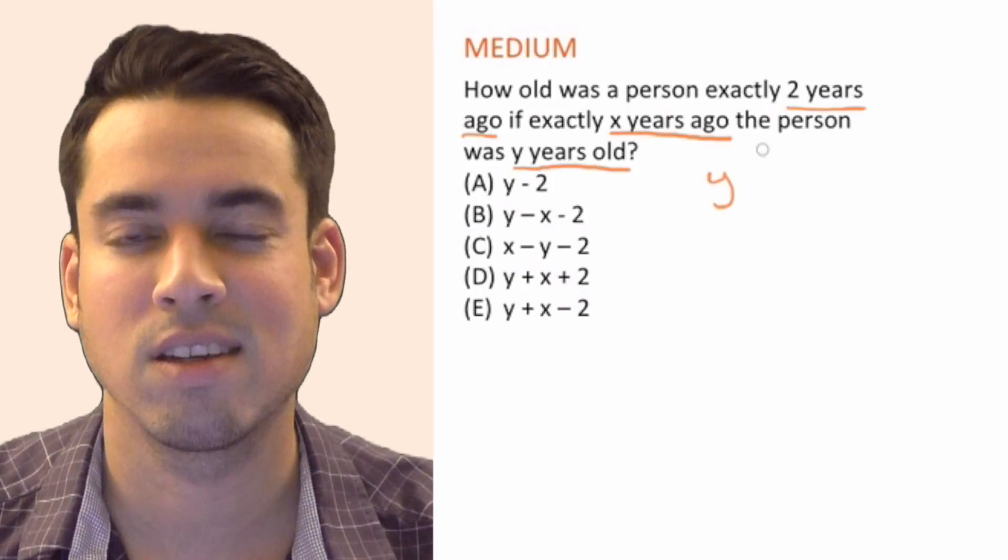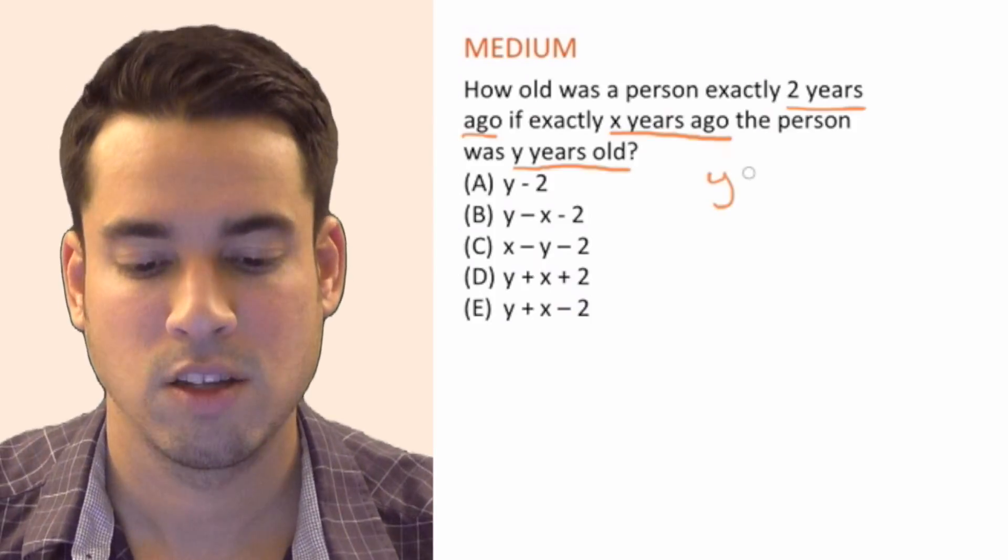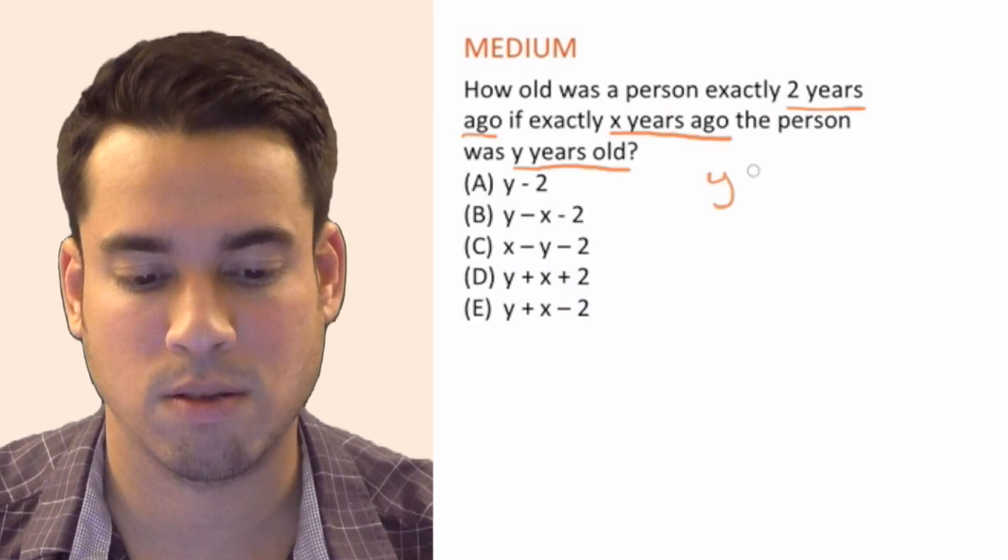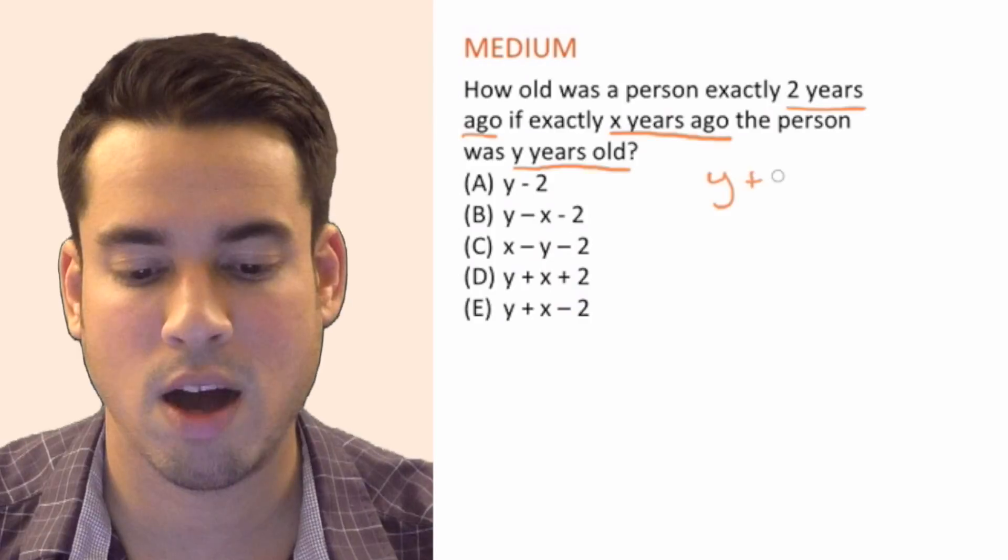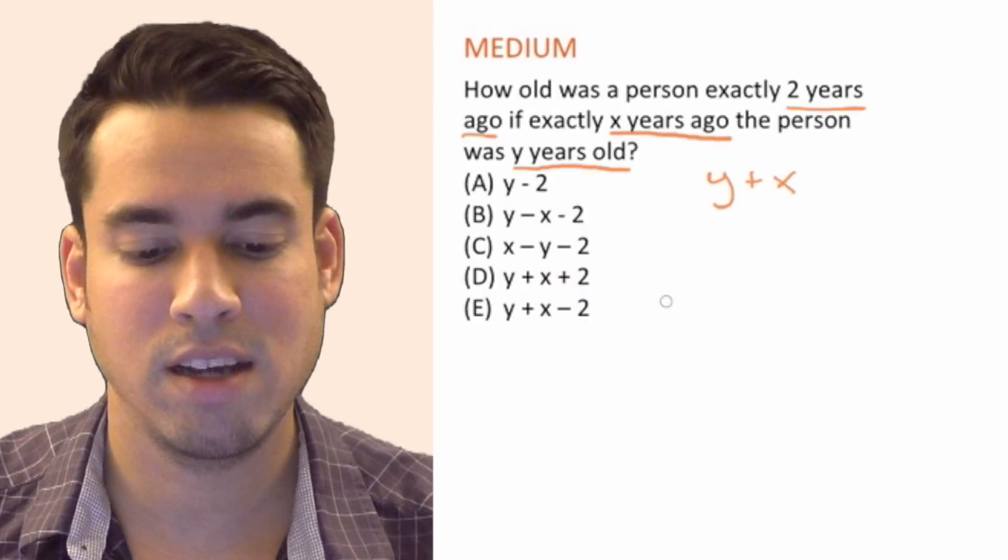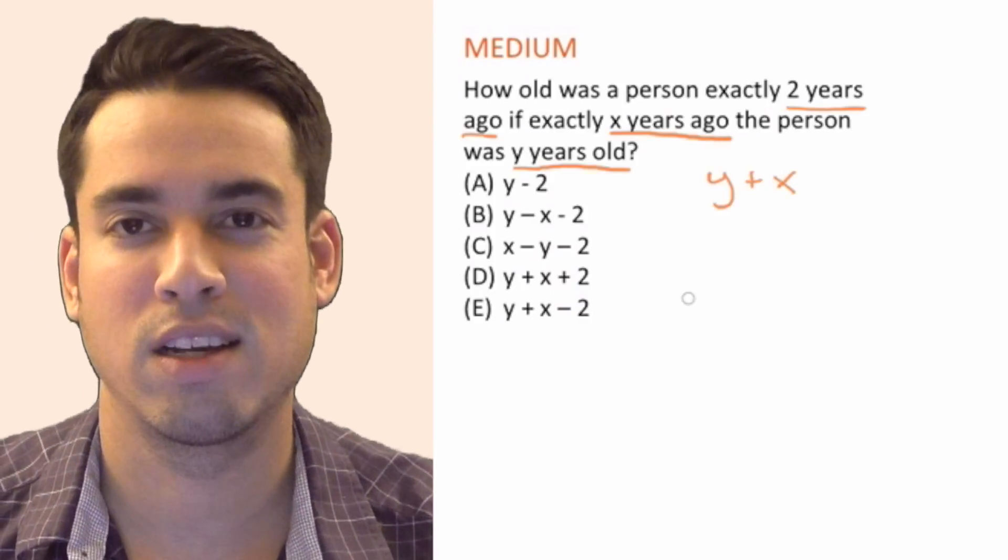So the person's current age is simply Y plus X. Now let me explain that a little bit more. Let's say I told you I was 30 four years ago.